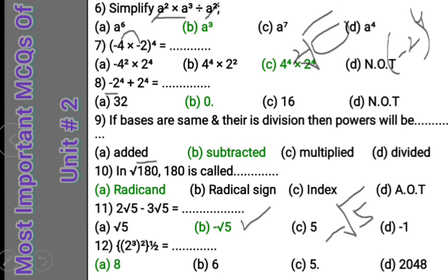Question 12: 2 power 3, whole power 2, whole power 1 upon 2 — when there is a power on a power, multiply the powers together. So 2 multiplied by 1 upon 2: the 2s cancel, leaving 2 power 3. Then 2 into 2 into 2 equals 8. The answer is 8.